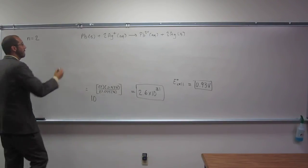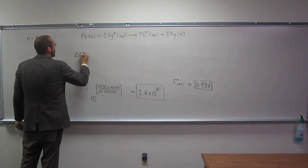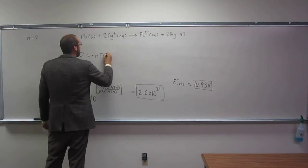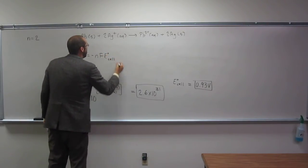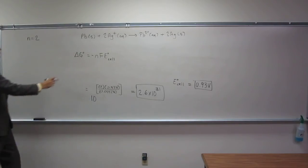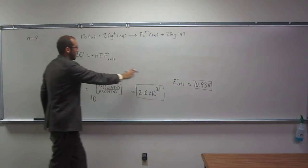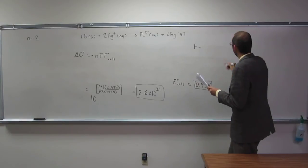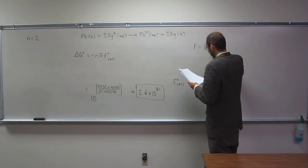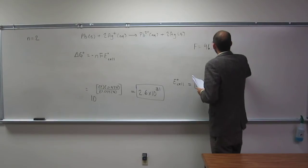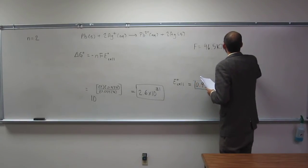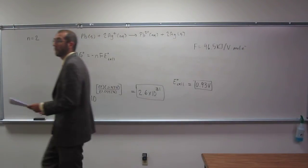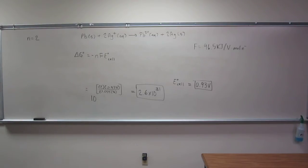So the last thing it wants us to do is figure out delta G. So delta G equals negative n F times E cell, like that. Remember, n is that, E cell is that, and F is going to be 96.5 kilojoules per volt mole electrons. It's Faraday's constant. That's given.